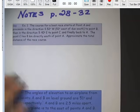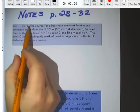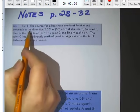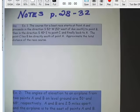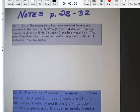So first one here, example one, make sure you find this in your notes. The course for a boat race starts at point A and proceeds in the direction of 52 degrees west of due south.